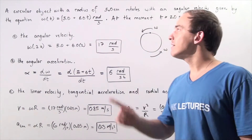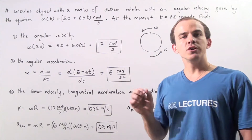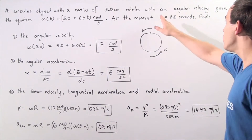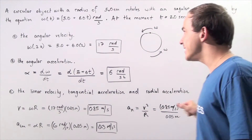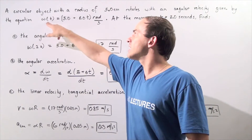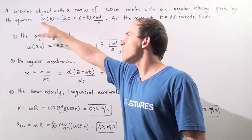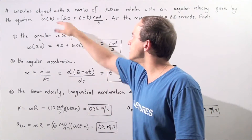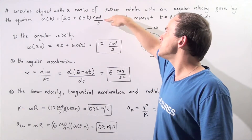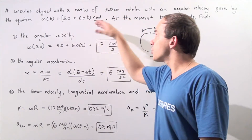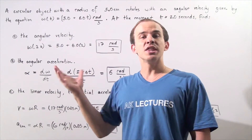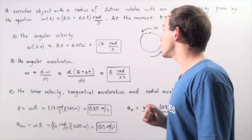Let's suppose that we have a circular object with a radius of 5 centimeters that rotates with an angular velocity given by the following equation. Our omega with respect to time, where omega is the angular velocity, is equal to 5 plus 6t radians per second. This equation tells us that as time increases, the angular velocity also increases.